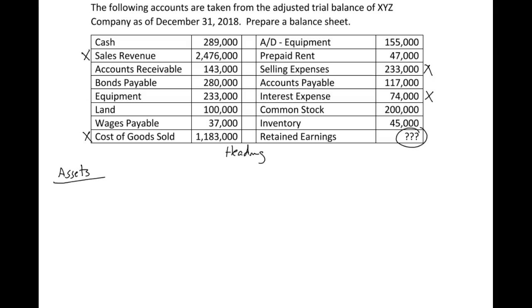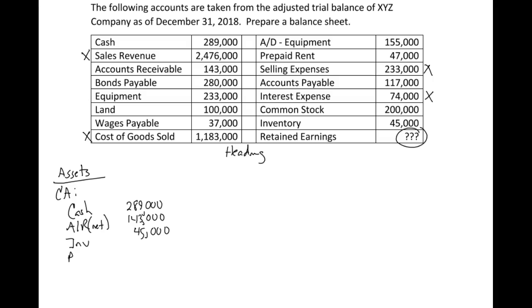So we have our assets section, then current assets. We have cash, and that was $289,000. We have accounts receivable — that would be the net amount, meaning we net it against any allowance for doubtful accounts, which we'll cover in a few videos when we get to accounts receivable. We had inventory at $45,000, and then prepaid rent at $47,000.